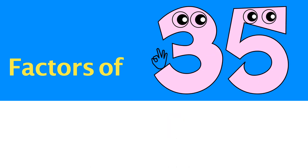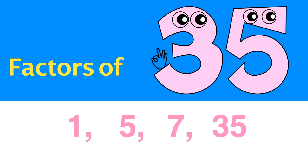Let's find the factors of 35. Starting from 1: 1 times 35 is 35. 2 cannot divide 35. 3 cannot divide 35. 4 cannot divide 35. But 5 can divide 35. 5 times 7 is 35. The factors of 35 are 1, 5, 7, and 35.